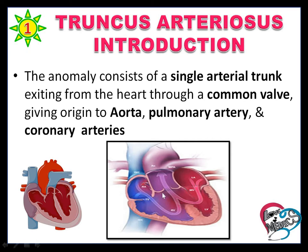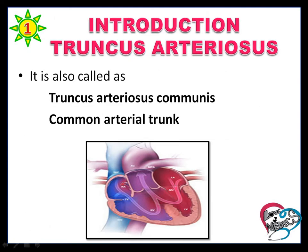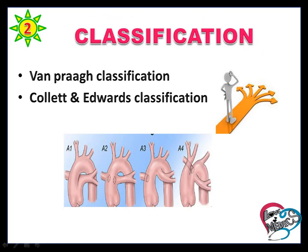In Truncus Arteriosus, the pulmonary artery, aorta, and coronary arteries all arise from a single arterial trunk. This is called Truncus Arteriosus. It is also known as Truncus Arteriosus Communis and Common Arterial Trunk.